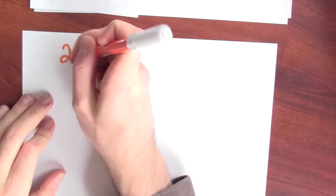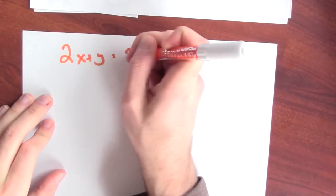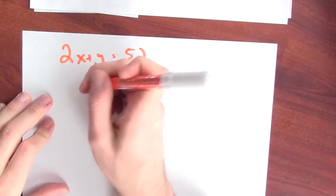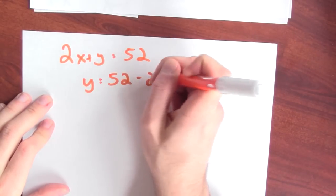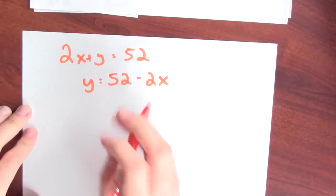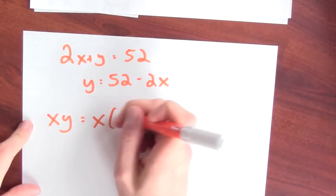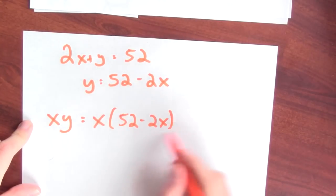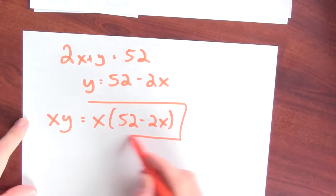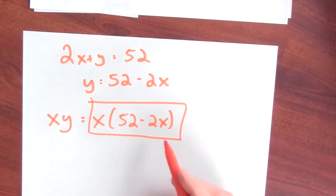Now, I use the constraint to solve the thing I'm trying to optimize for a single variable. So I'm going to solve this for a single variable. I've got that 2x plus y is 52. So I could solve for y. Y is 52 minus 2x. The quantity that I'm trying to maximize is x times y. But if y is 52 minus 2x, then I'm really trying to maximize x times 52 minus 2x because this quantity is y. So this is the function of a single variable that I'm trying to maximize.